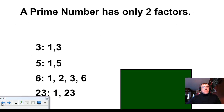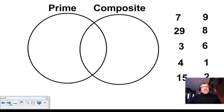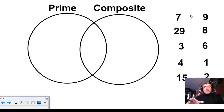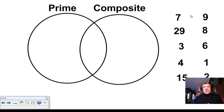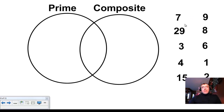So let's see how we do putting this together. We've got our Venn diagram here, and we're going to separate these numbers. I want you to stop the video and see where you would put each of these numbers on this Venn diagram. It's either going to be prime, composite, or neither prime nor composite.